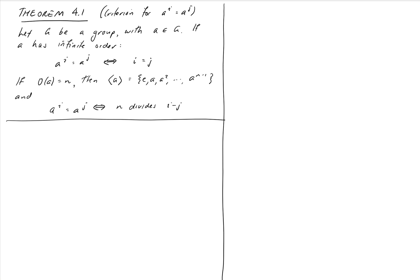If it's got infinite order, then a to the i equals a to the j means that i equals j. And if it's got finite order, then an equivalent statement is that i minus j is a multiple of n. So I just want to state a few corollaries to this as the only thing we're going to do in this video.